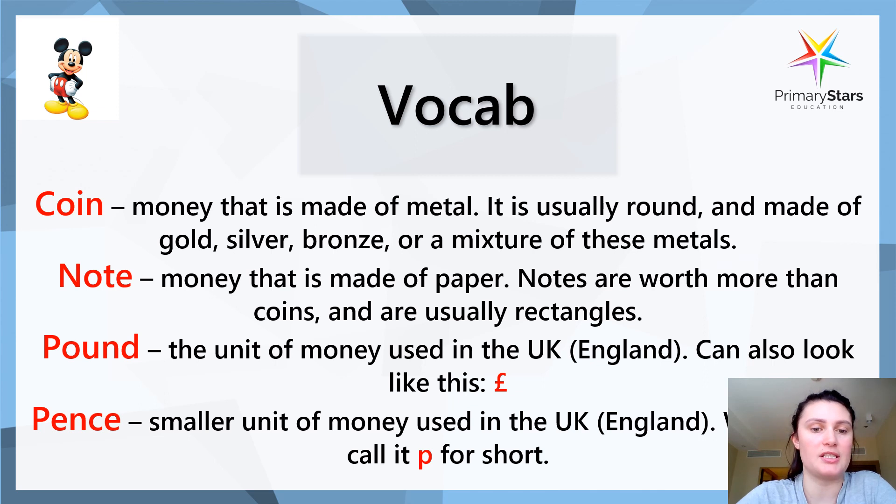So let's start by going over our vocab. We have a coin which is money that is made of metal. It is usually round and made of gold, silver, bronze, or a mixture of these metals. A note is money that is made of paper. Notes are worth more than coins and are usually rectangles. A pound is the unit of money used in the UK or in England. It can also look like this, the pound sign. And pence is a smaller unit of money used in the UK, and we call it P for short.